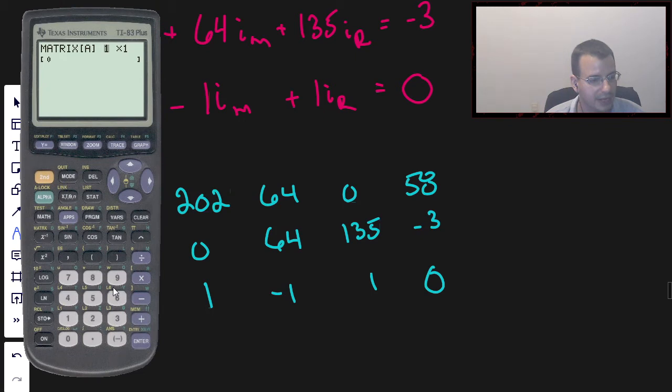Matrix A is going to be a 3 by 4. We're going to put in our numbers: 202 enter, 64 enter, 0 enter, 58 enter, 0 enter, 64 enter, 135 enter, negative 3 enter, 1, negative 1, 1, 0.